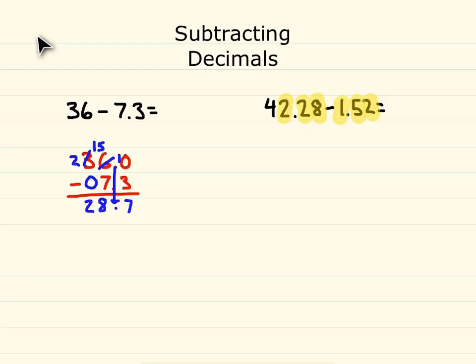So, we have 42 and 28 hundredths, and we need to take our 1 away from our 2 in our ones place. So, we need to put our 1 right here. We take our 5 in our tenths place from our 2 in our tenths place, so that goes right here. And our 2 in our hundredths place away from our 8 in our hundredths place, so that goes right here.